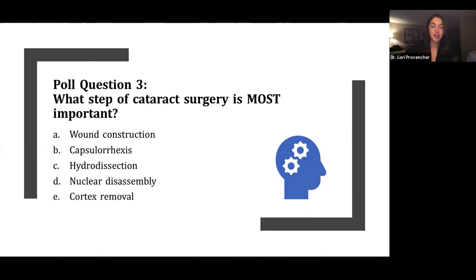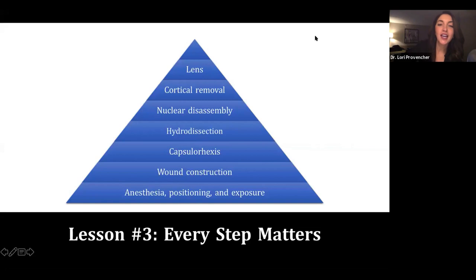I would disagree with everyone here, but I kind of agree with everyone at the same time. So my argument is that every single step matters, but the majority of you selected steps that are earlier in the case, which makes sense to me as well. I like to think of cataract surgery as building a house or building a pyramid. Every step matters, and you've got to get the steps early on in the case right for a successful surgery.